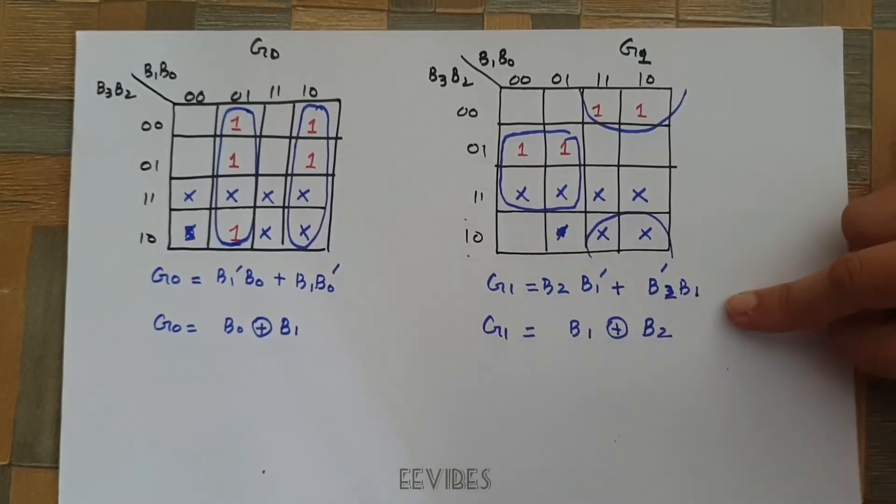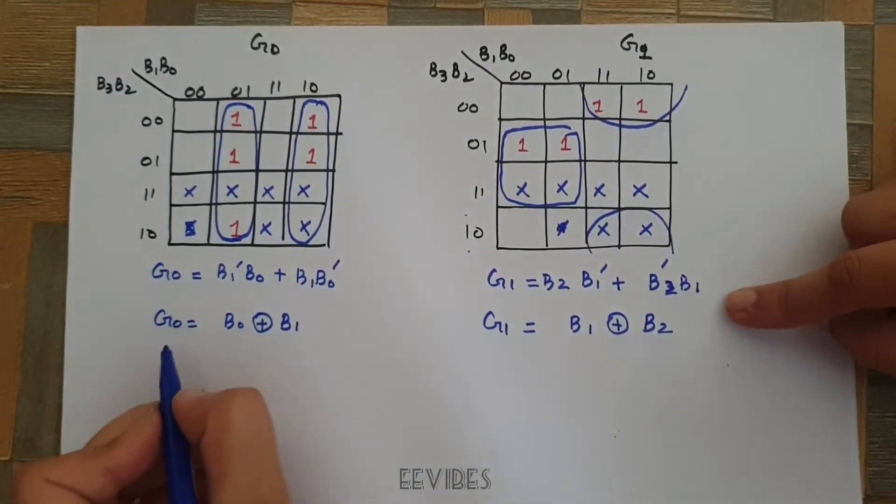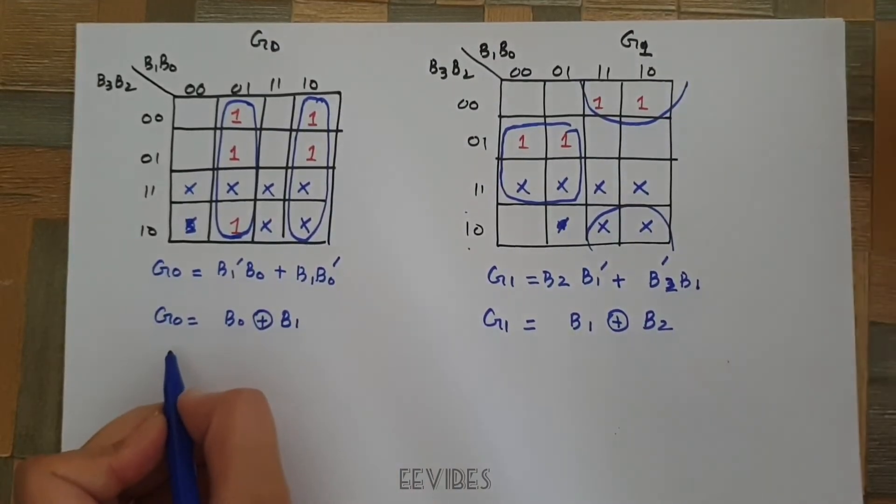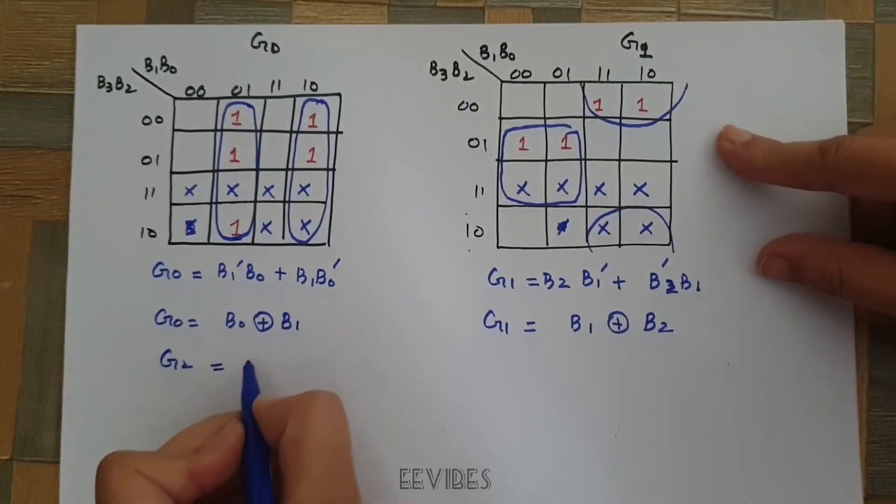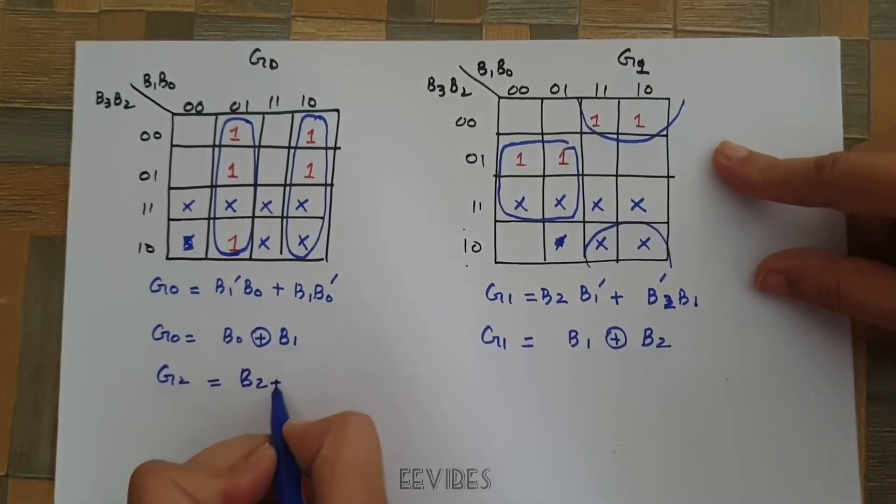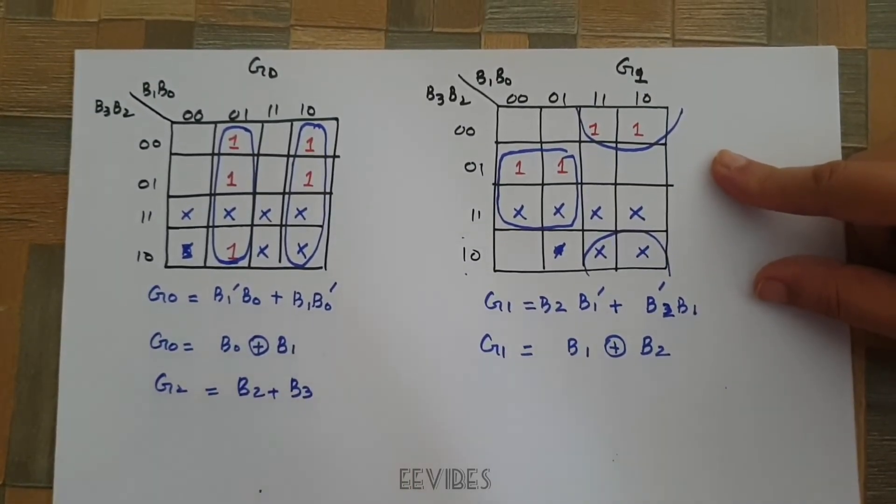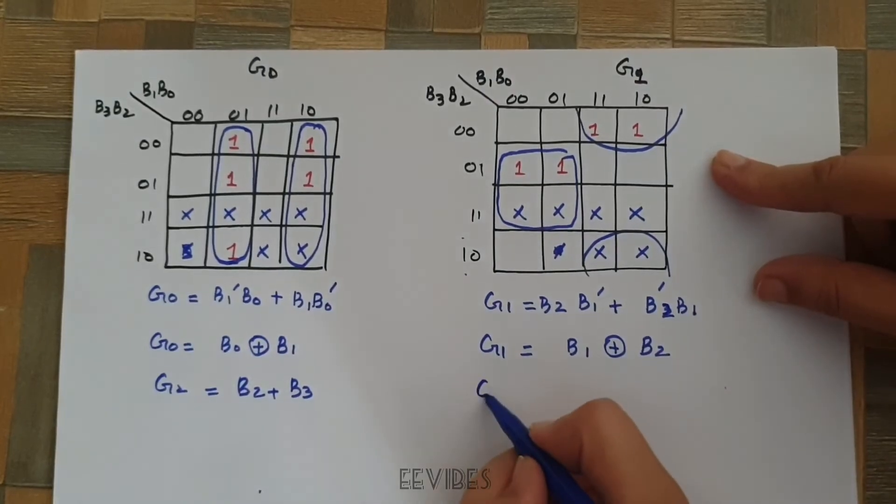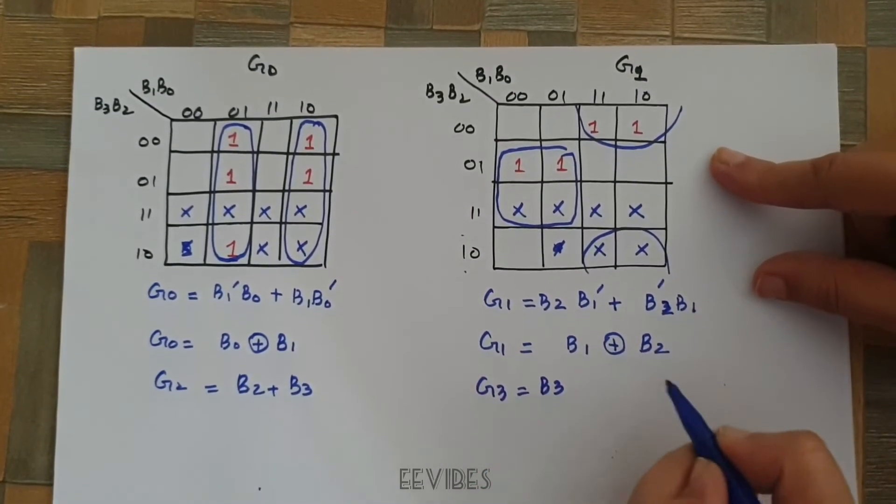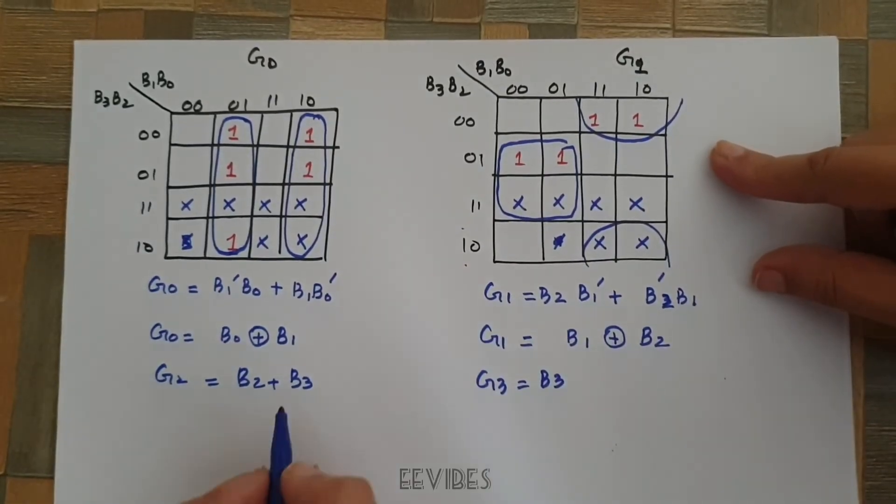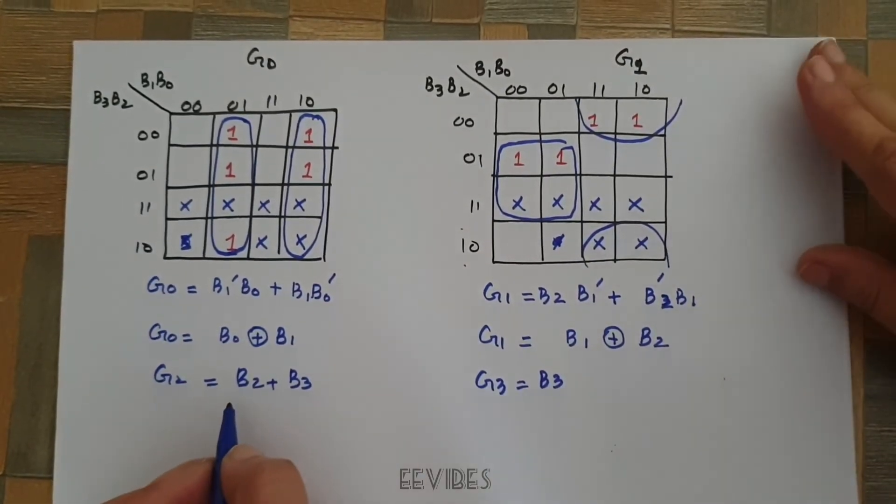Once you have derived the expressions for G0, G1 and G2 which was equal to B2 plus B3 and then G3 which was equal to B3, you can simply construct the gate level diagram for implementing this function. So, let's just do that.